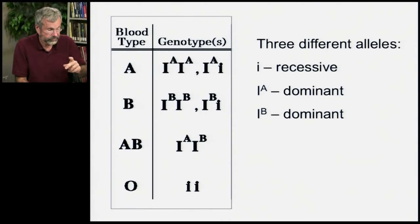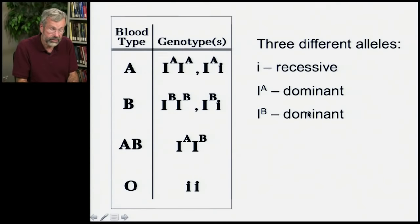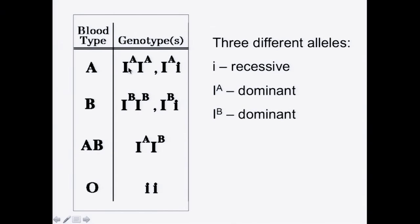For example, let's look at blood type. You may be familiar with type A, type B, type AB, and type O — our four possible blood types in the population. It turns out these are due to three different alleles. If you're type A, you're either homozygous for the I-superscript-A allele or heterozygous between that and the recessive allele, little i. Likewise, if your blood type is B, you may be homozygous or heterozygous with at least one copy of the B allele. People who are type AB have one A allele and one B allele. And if you're homozygous for the recessive, then you're type O.